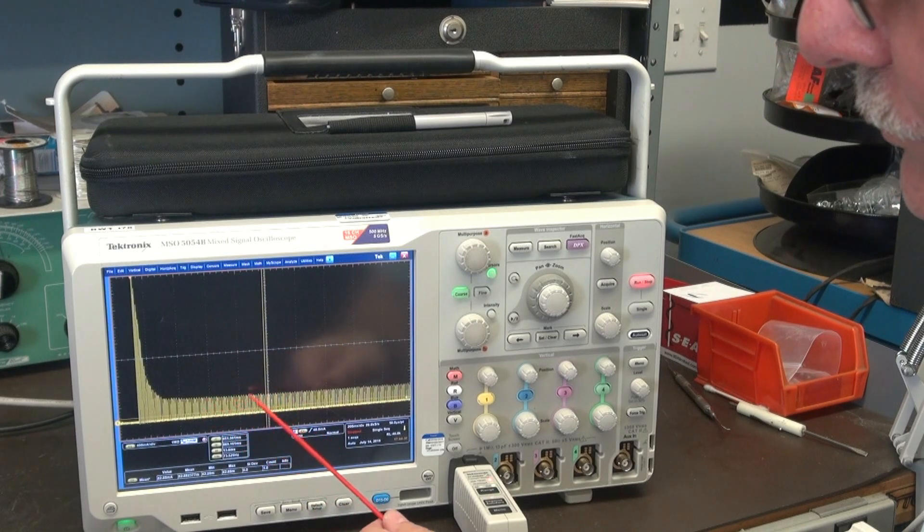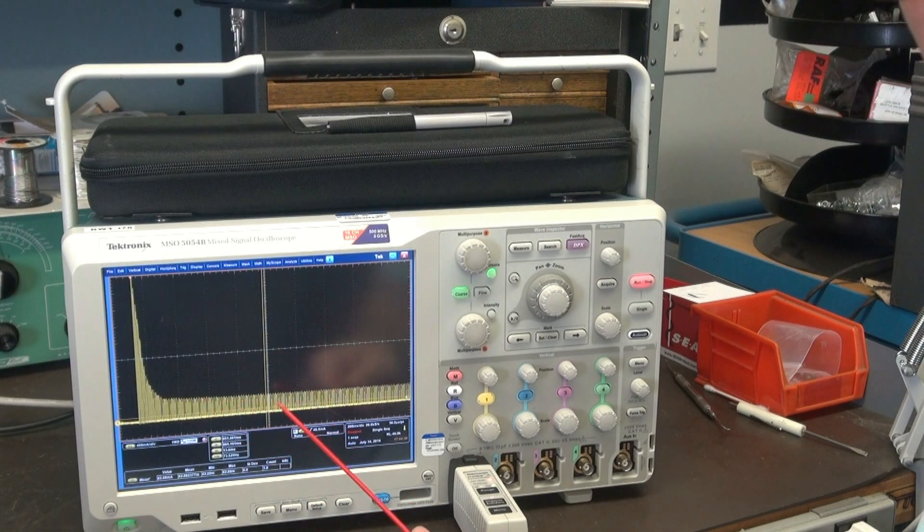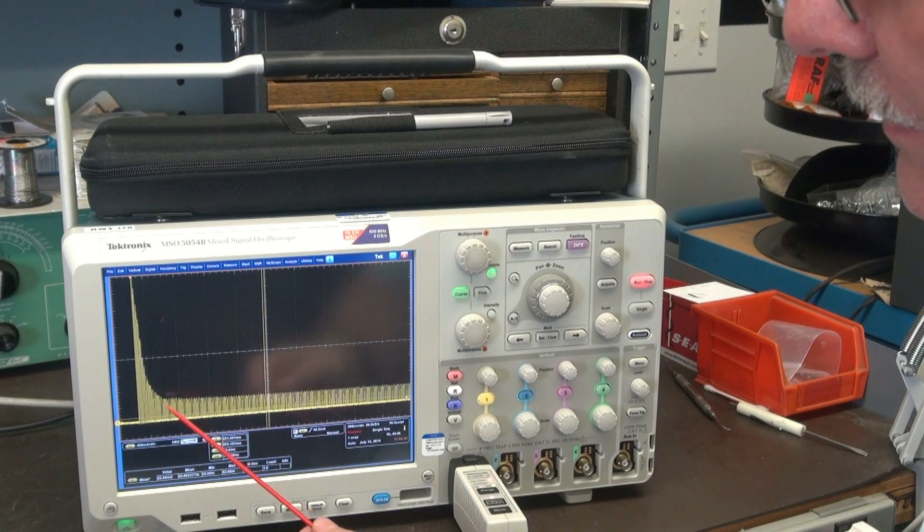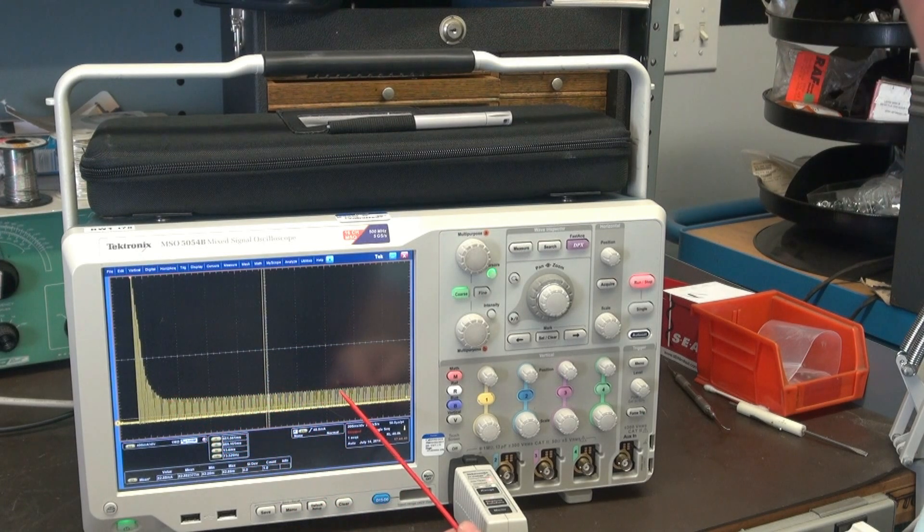Now all these little lines you're seeing here, that's not real. That's a digitizing effect of the scope. What we're really looking at is the average DC current on this trace.